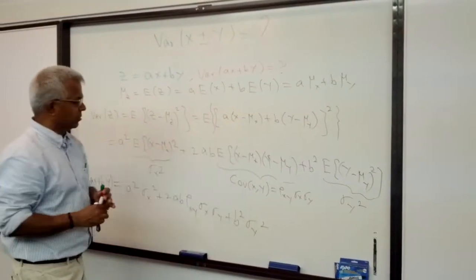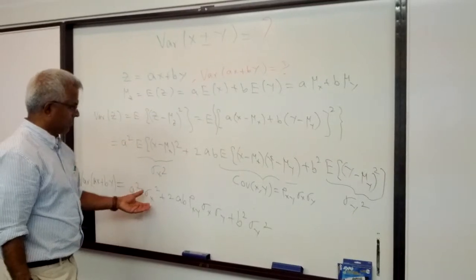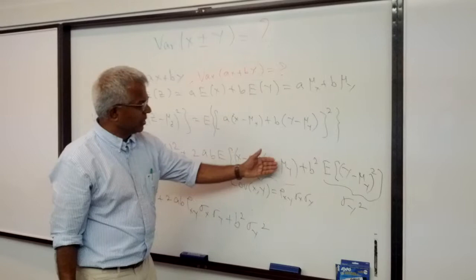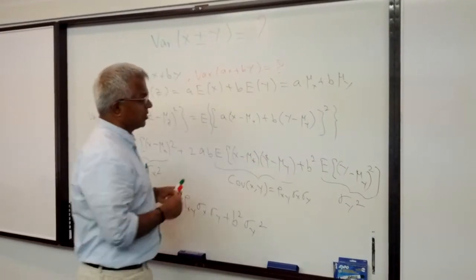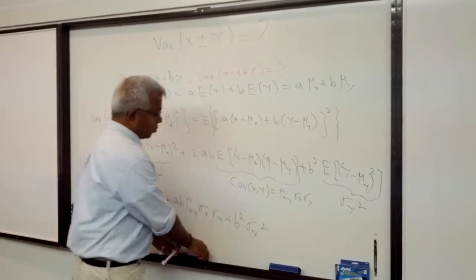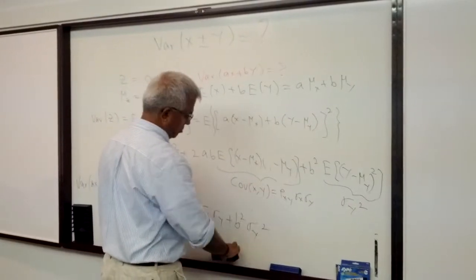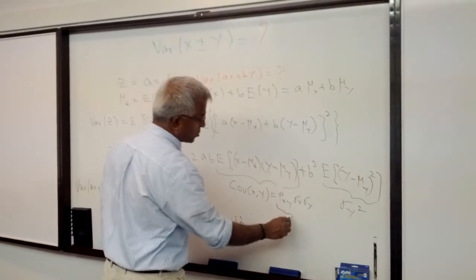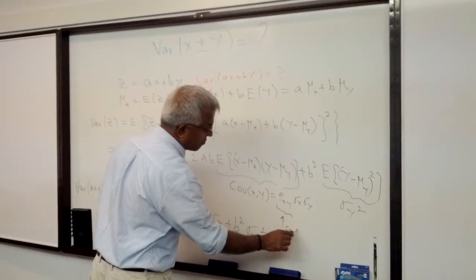You get three terms. The first term is A squared Sigma X squared. The second term is 2AB multiplied by expected value of X minus MuX multiplied by Y minus MuY the whole square. But that's the covariance between X and Y. As you know, the covariance you can express in terms of the correlation coefficient.